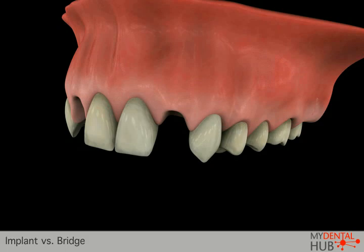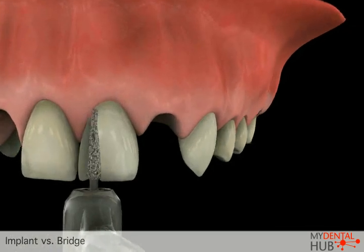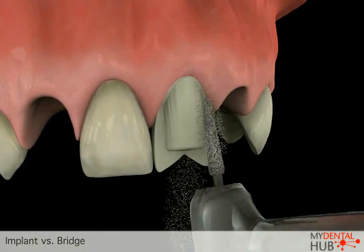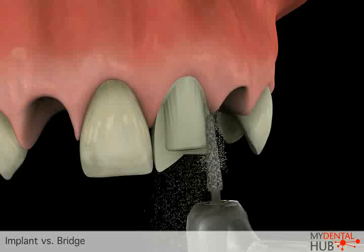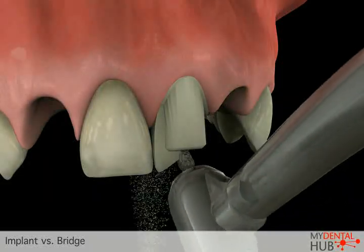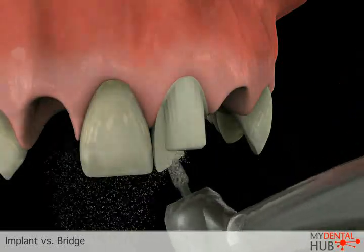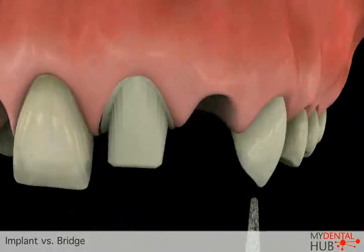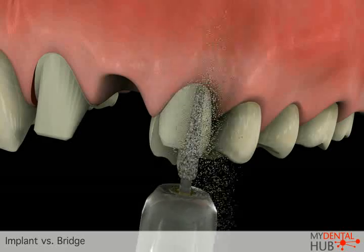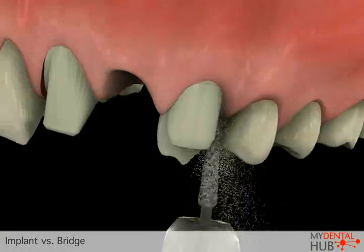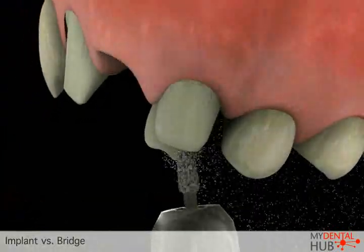A missing tooth can be replaced in several ways. One common option is replacement with a bridge. A bridge can provide an aesthetic replacement; however, it does require the teeth on either side of the space to be shaved down and used as supports for the bridge restoration.